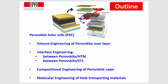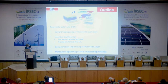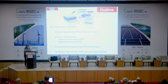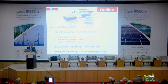Then you have interface engineering. As I mentioned, you create charges but these charges can also recombine at the interfaces. The perovskite device is nothing but interfaces. There is one interface between the hole transport material and the perovskite, and another interface between the perovskite and the electron transport layer. These are the two interfaces you have to control in order to get high efficiency and stability. Then I have composition engineering of perovskite — the next slide will show what perovskite is and how we engineer its composition.